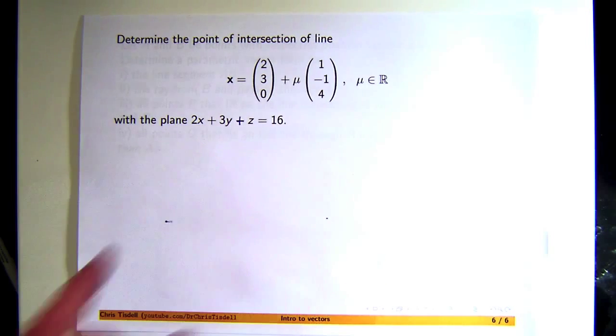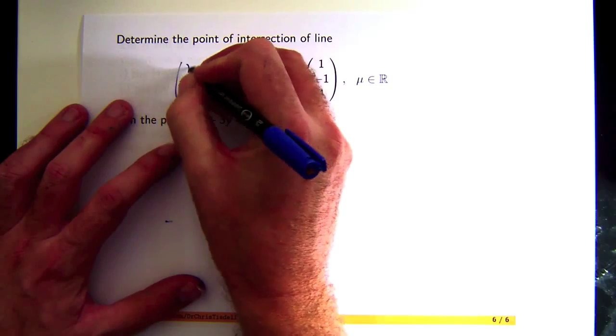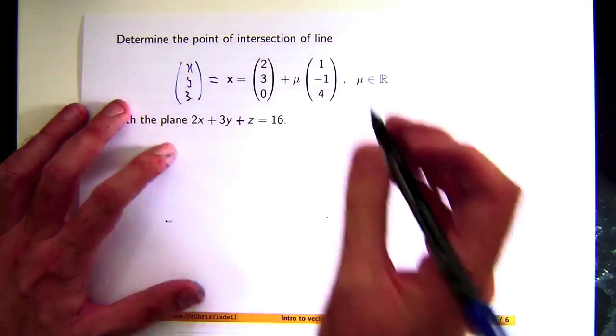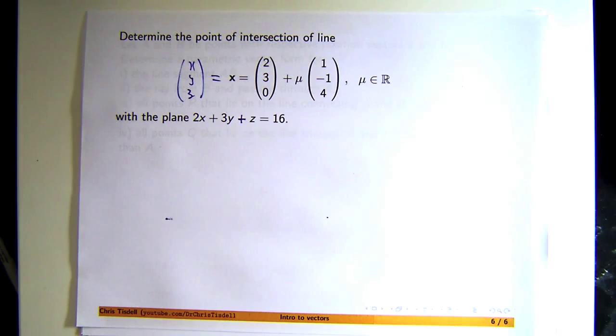And this is a plane sitting in three-dimensional space and it's a Cartesian form. So how do we do it? Well the secret is just kind of realizing that we can write our position vector x of the points on the line as a column vector and then work component-wise.